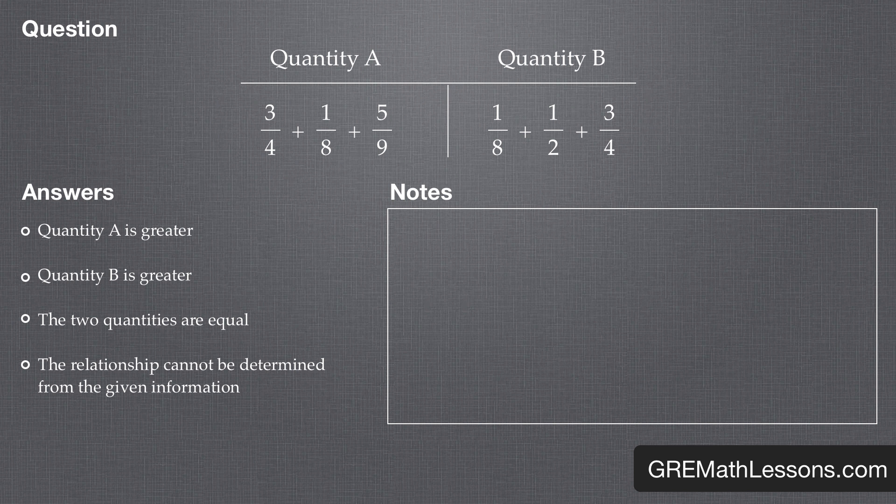I'll say that one more time. If both columns don't contain any letters or variables, some sort of relationship can always be determined. If we look at our problem, we can instantly tell that the answer definitely won't be the last option. Let's cross it off our list.